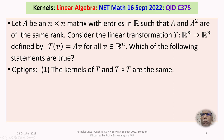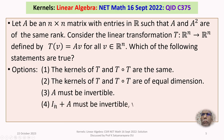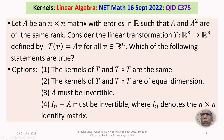We are given four options. Option 1: the kernels of T and T-composed-T are the same. Option 2: the kernels of T and T-composed-T are of equal dimension. Option 3: A must be invertible. Option 4: I_n plus A must be invertible, where I_n denotes the n-by-n identity matrix.